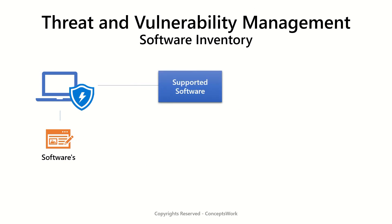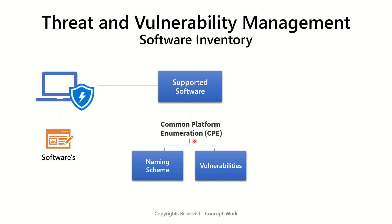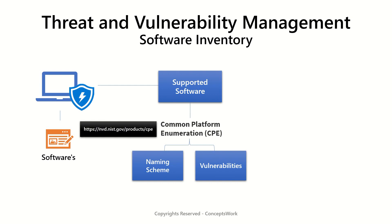But currently that's not always the case, because of two different categories of software — think of one as supported software and the other as unsupported software. Any software for which a CPE is defined is termed as supported software, because vulnerabilities are published for these softwares. CPE stands for Common Platform Enumeration, which is a structured naming convention for softwares and packages. The best resource to check more detail about CPE is the NVD site, which is nvd.nist.gov/products/cpe.